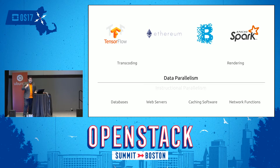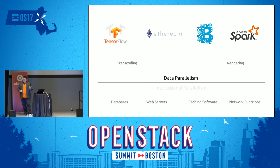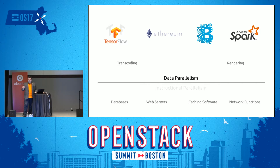That's where we're seeing applications spring up: things like TensorFlow, which is Google's machine learning library; Ethereum, a blockchain-backed cryptocurrency; Apache Spark, which does in-process computations for big data sources; and many more. These applications have data models that are much denser with very little actual computation drive, needing to be run against them.